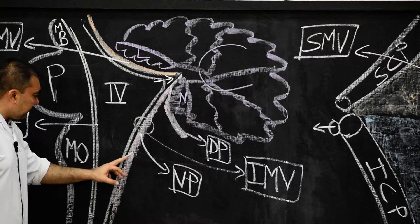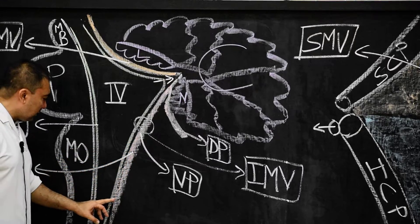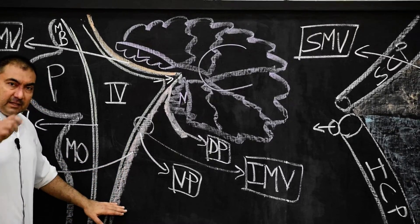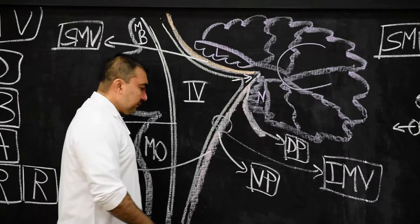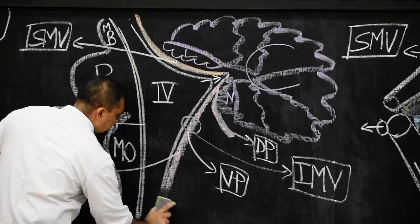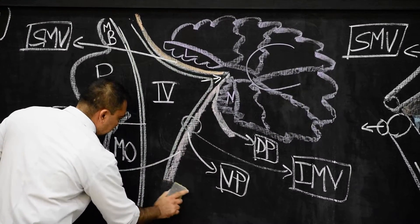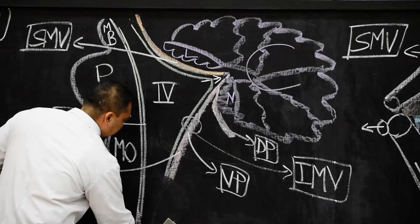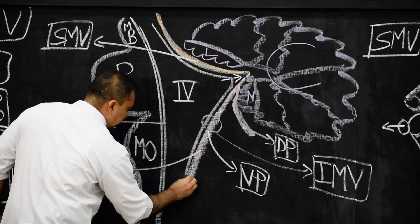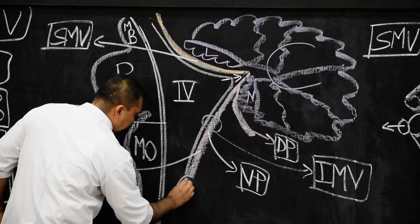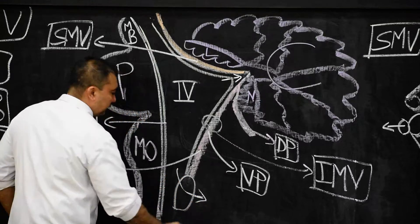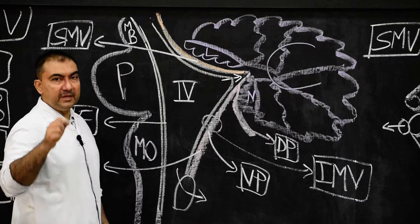Where is it going? This ventral layer of pia matter will go down, and suddenly in the middle it will leave a gap — it will leave a space. Here I want to show a space, and the space which I am going to show here is the foramen of Magendie.